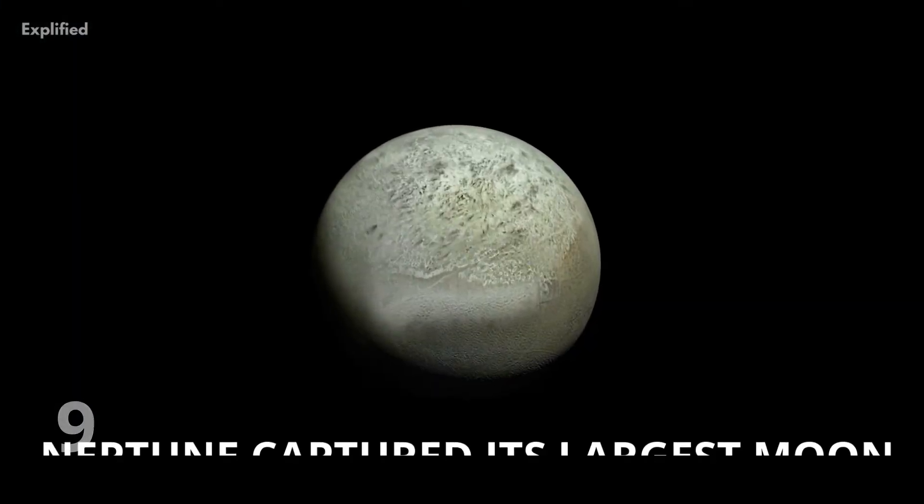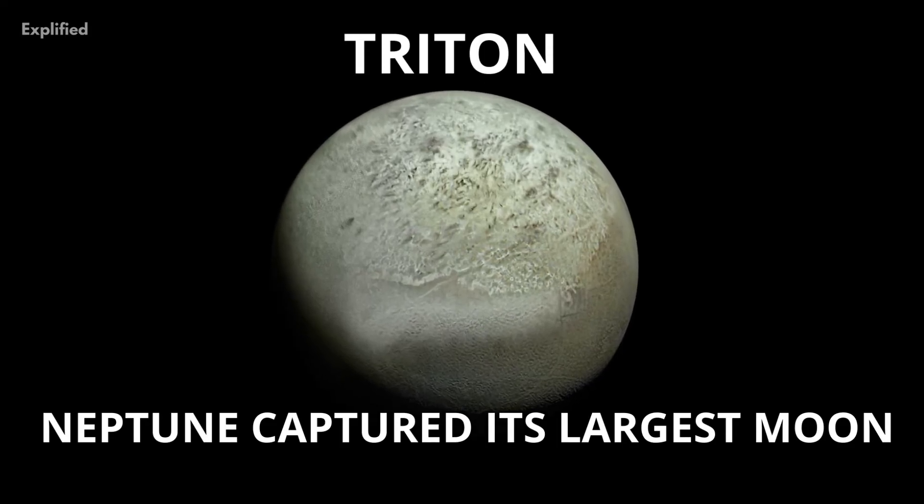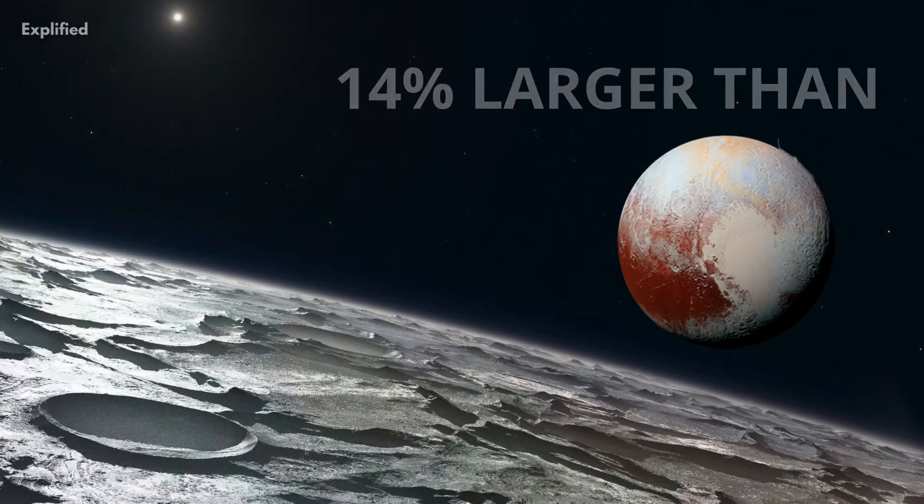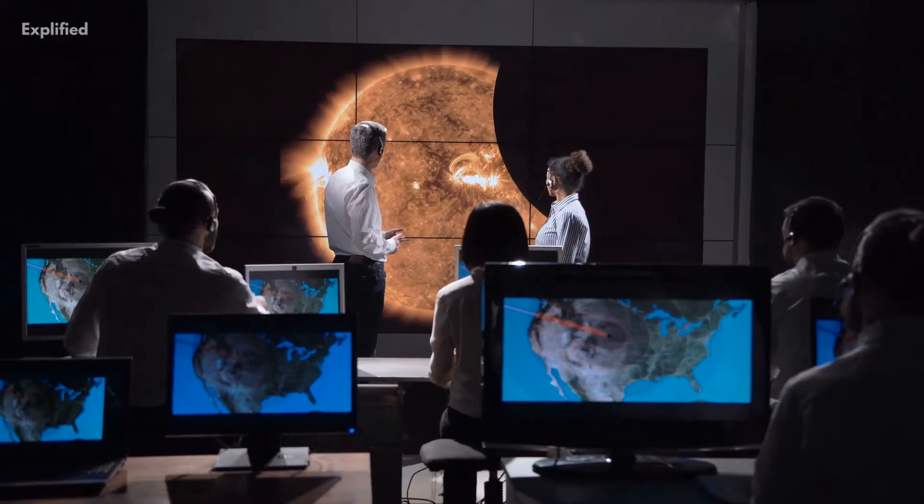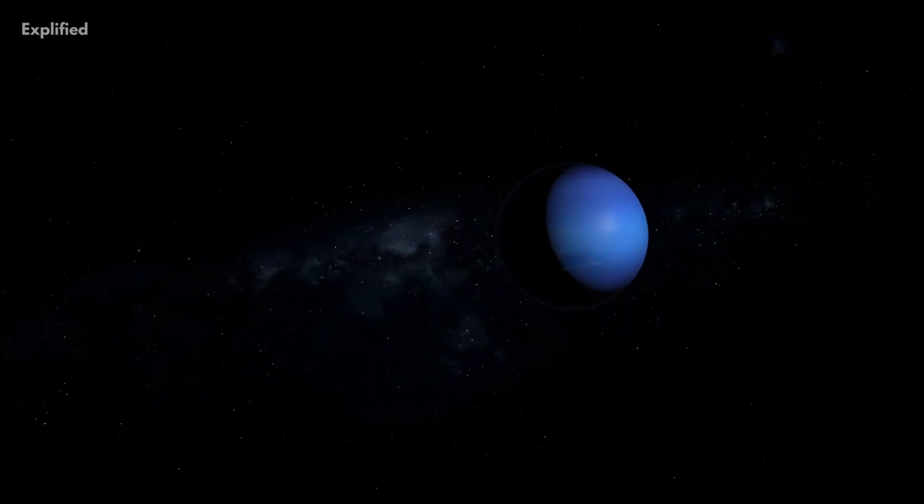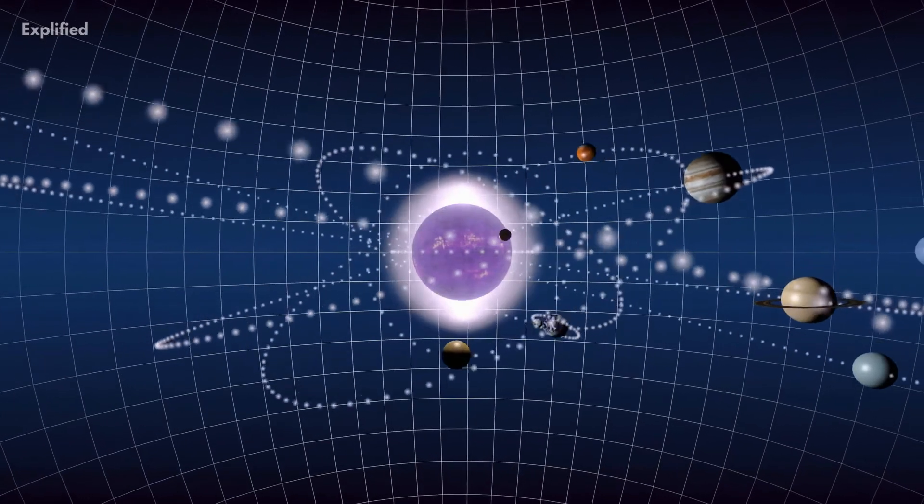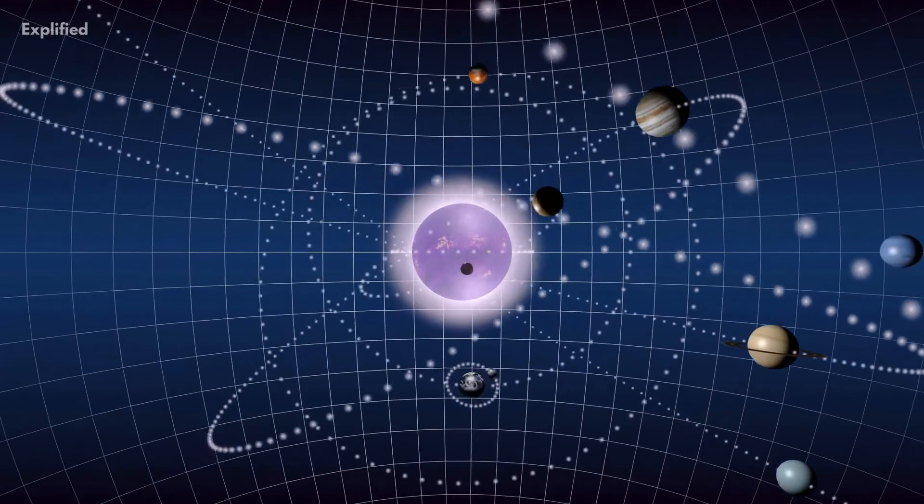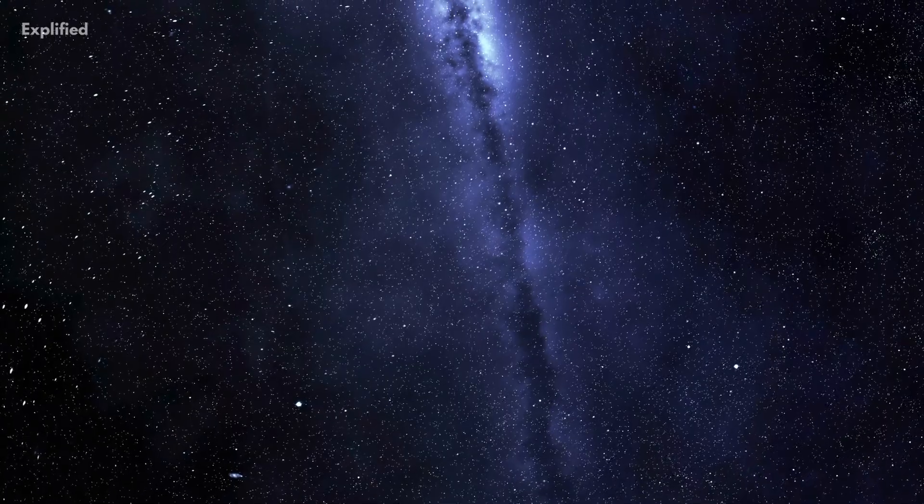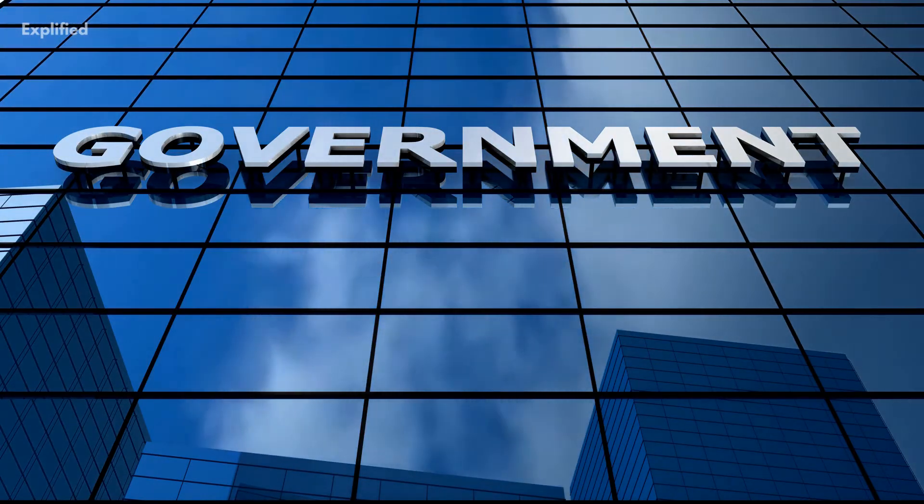Number 9. Neptune captured its largest moon Triton from the Kuiper Belt. Since Neptune's Triton is only 14% larger than Pluto, and also appears to have a similar composition, it is agreed by astronomers that Neptune might have captured this Kuiper Belt object while it migrated farther from the Sun. Current speculations also state that Triton was part of a binary system, and after it no longer remained a part of the belt, the other object was also expelled from the system. Sounds like some sort of governmental structure, doesn't it?